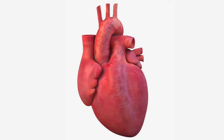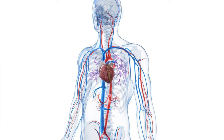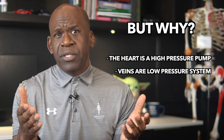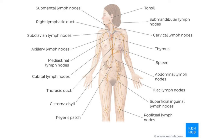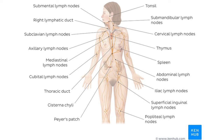The heart is a high-pressure pump that pumps blood down to your lower extremities through the arteries. The veins are a low-pressure system that rely on the sequential contraction and relaxation of the muscles — that is to say the muscular pump — to pump fluid back up to the heart, because obviously there is no heart in your lower extremities to mobilize the fluid. As you move about throughout the day, your muscles help your veins circulate blood through your body. The lymphatic system relies on the same muscular pump mechanism to circulate fluid throughout the body.